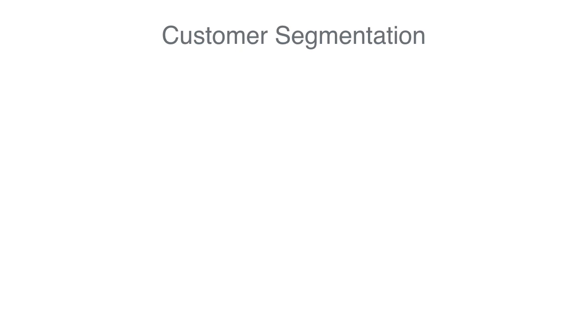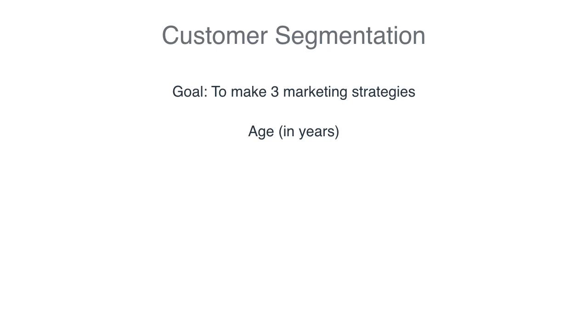Let's start with an application in marketing, in particular in customer segmentation. We have an app and we want to market this app. We've looked at our budget and we can make three marketing strategies. The idea is to look at the potential customer base and split it into three well-defined groups. When we look at the customer base, we realize we have two types of information: their age in years, and their engagement with a certain page in number of days per week.